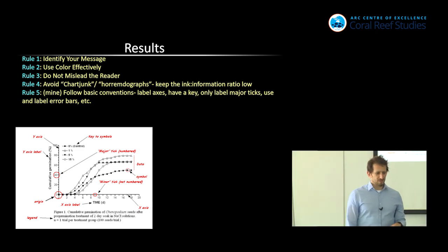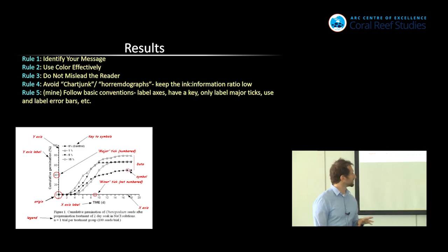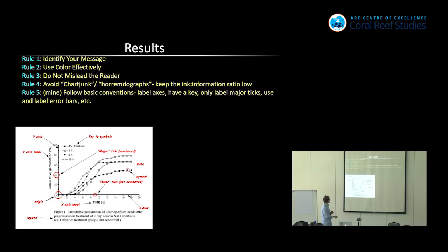This is one of my rules rather than one of theirs. Follow basic conventions. There are conventions on what should be on a figure. These include things like having your axes labeled. What's on the y-axis? What is on the x-axis? Have a key. Use, only label the major ticks. Don't label every single one. Only label the big ones so that there's less ink there. If it's appropriate, use and label error bars. So there's a whole range of these. You should have your x-axis labeled. What is it? That's the x-axis. Where are the origins? Having major ticks. This is the key. These are the different symbols. All of those should be in there.